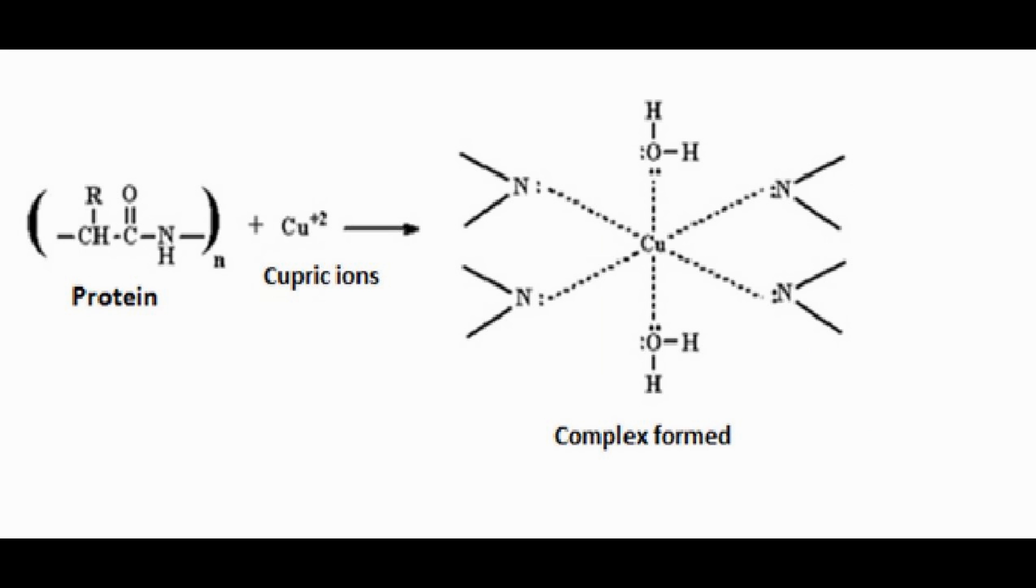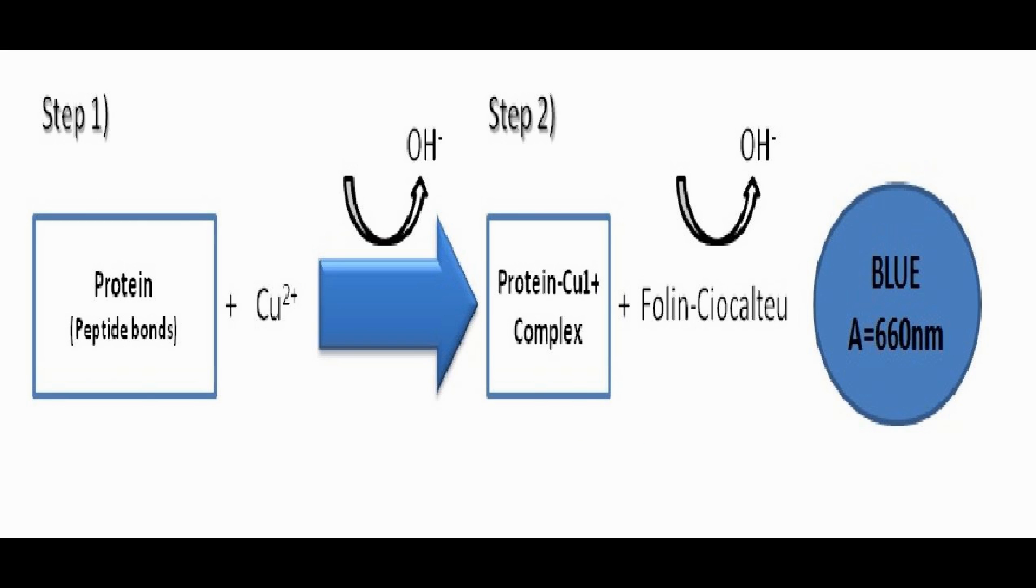Then in the other reaction, the blue color is developed by the reduction of phosphomolybdic and phosphotungstic compounds in the Folin-Ciocalteu reagent by the aromatic amino acids like tyrosine, tryptophan, etc. present in the protein. Thus, the color intensity which is measured at 660nm depends on the amount of these aromatic amino acids present in the protein and it will vary for different proteins.